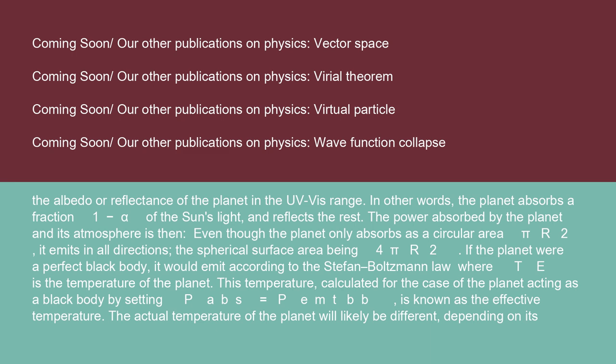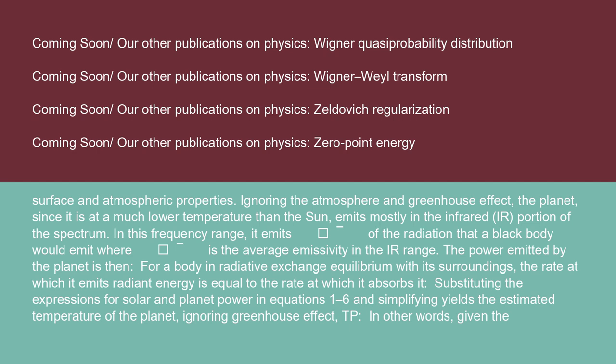The power absorbed by the planet in its atmosphere is then considered. Even though the planet only absorbs as a circular area πr², it emits in all directions, with spherical surface area 4πr². If the planet were a perfect black body, it would emit according to the Stefan-Boltzmann law where T_E is the temperature of the planet. This temperature, calculated by setting P_abs = P_emit, is known as the effective temperature. The actual temperature of the planet will likely be different depending on its surface and atmosphere properties.